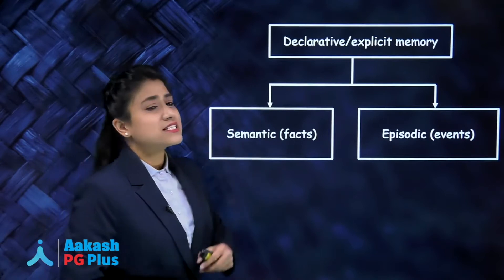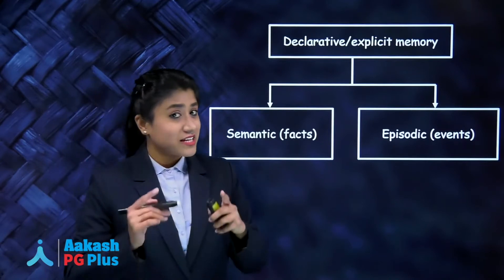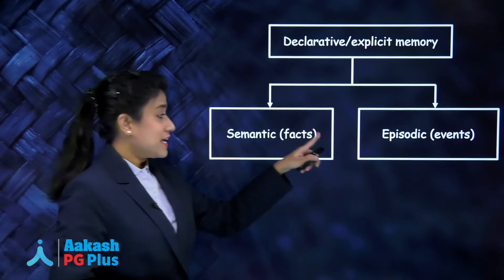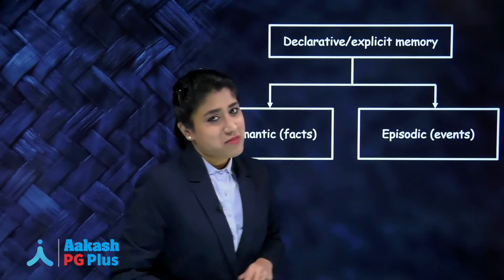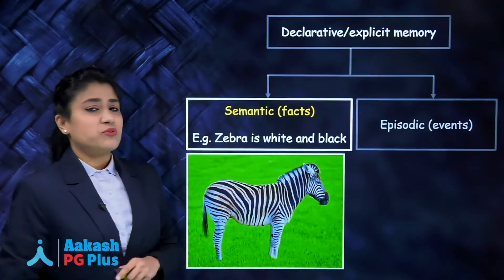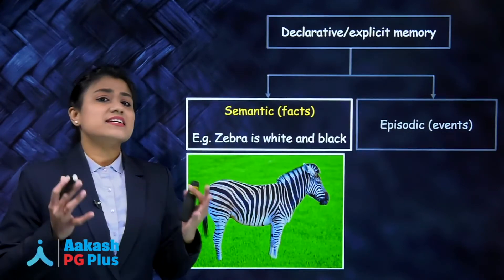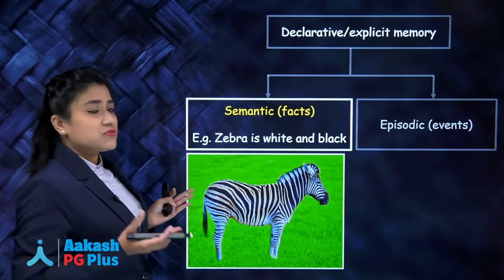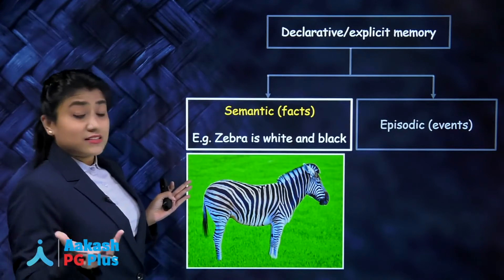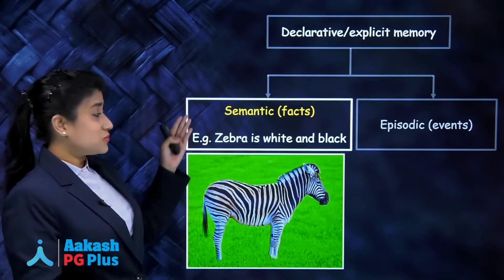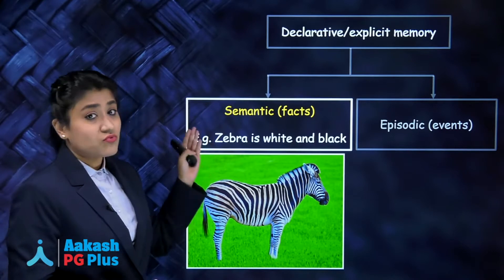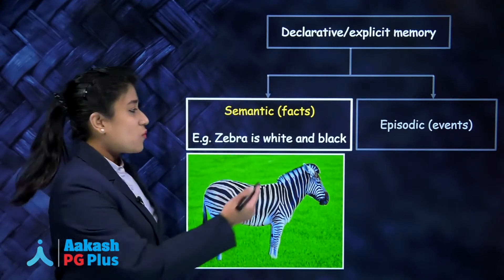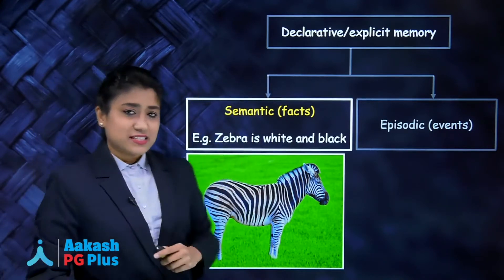Explicit memory is divided into two subtypes: semantic memory and episodic memory. Semantic memory tells about facts — for example, 'a zebra is white and black.' That is a fact, so it comes under semantic memory, which is a subtype of explicit memory.